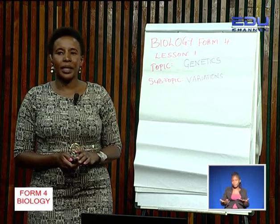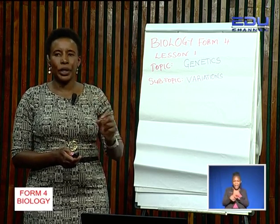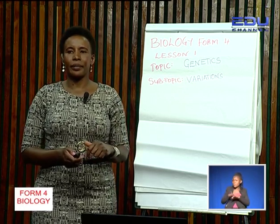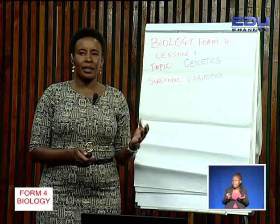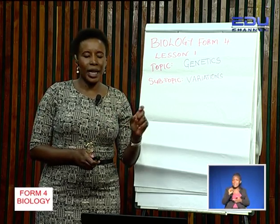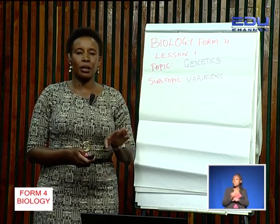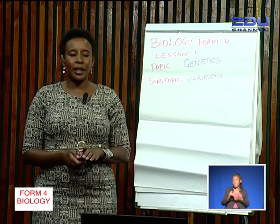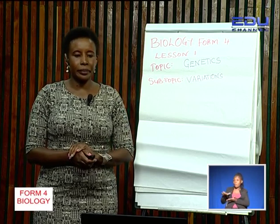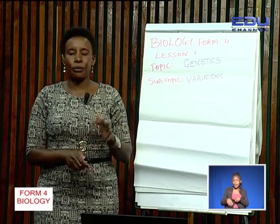The physical expressions of these characteristics can be influenced by the environment. For example, a plant that has genes for growing tall — if it grows in an environment that is not conducive, lacking adequate water or nutrients, that plant will not grow tall; it will grow short. That is why these continuous variations can be influenced by the environment, and they have intermediate forms of phenotypes.